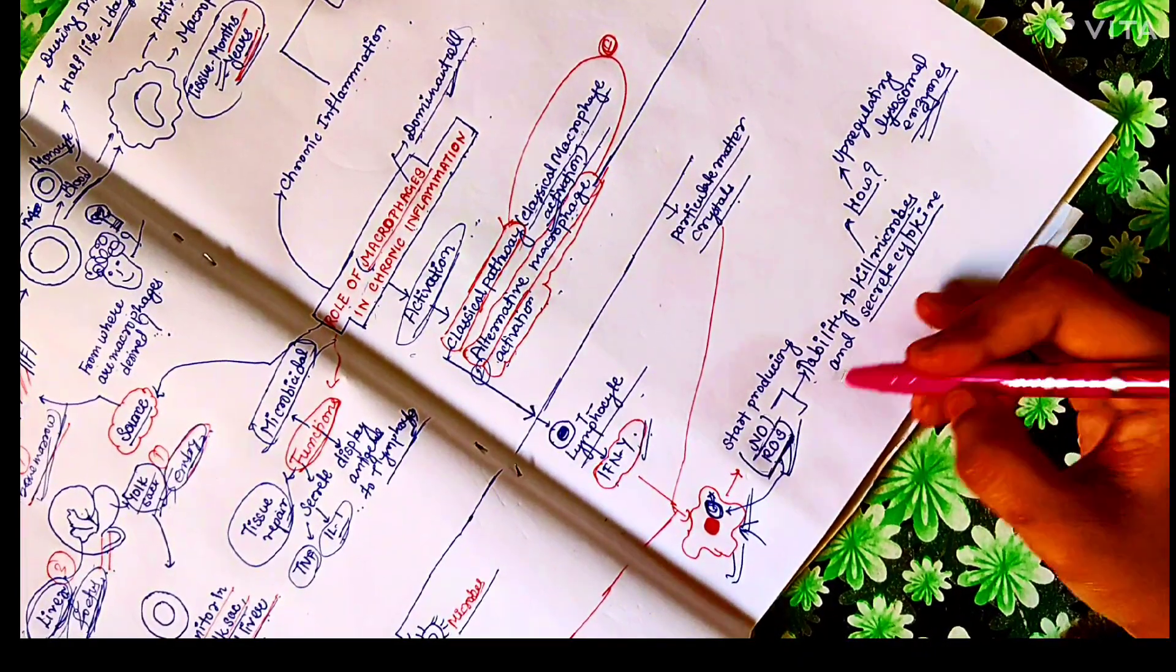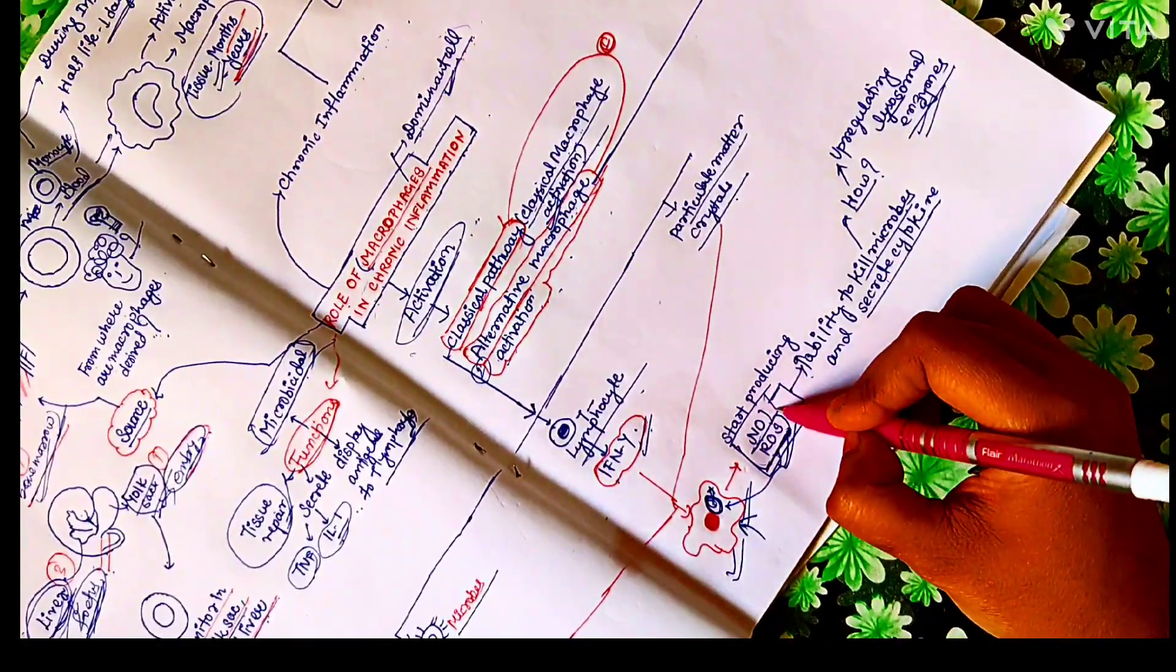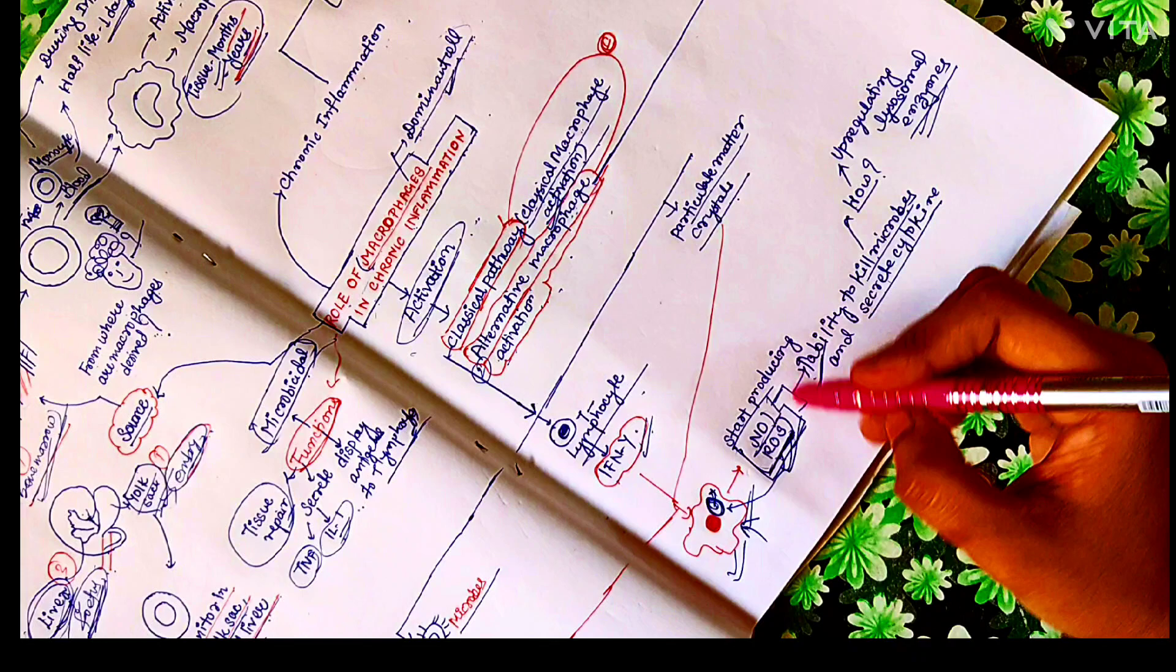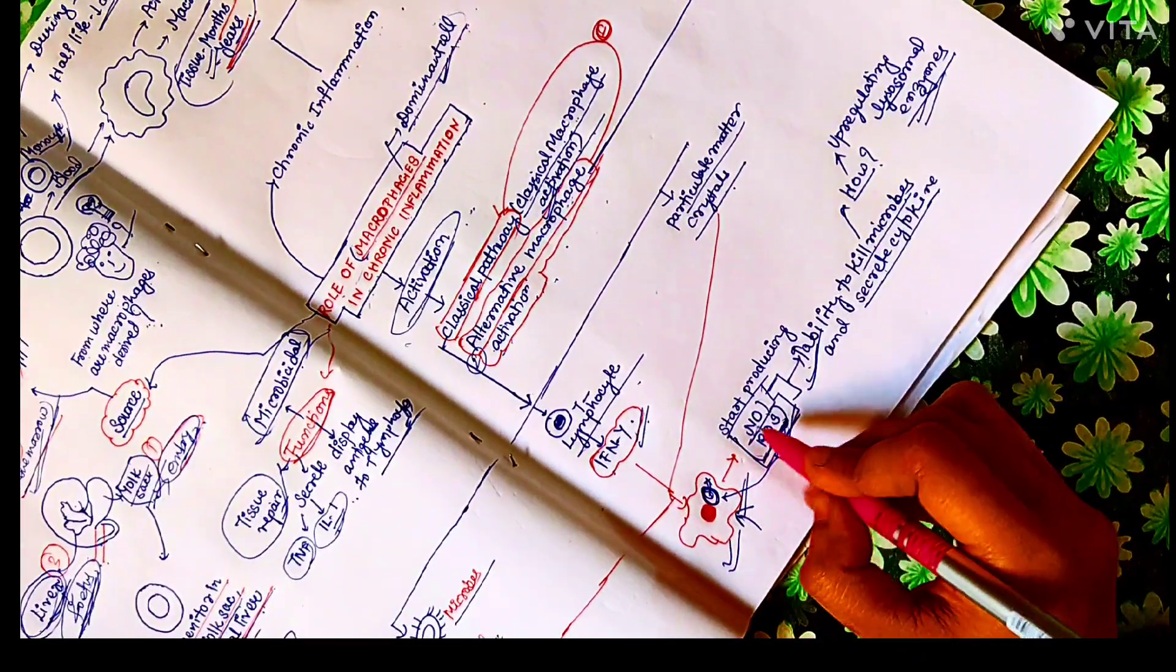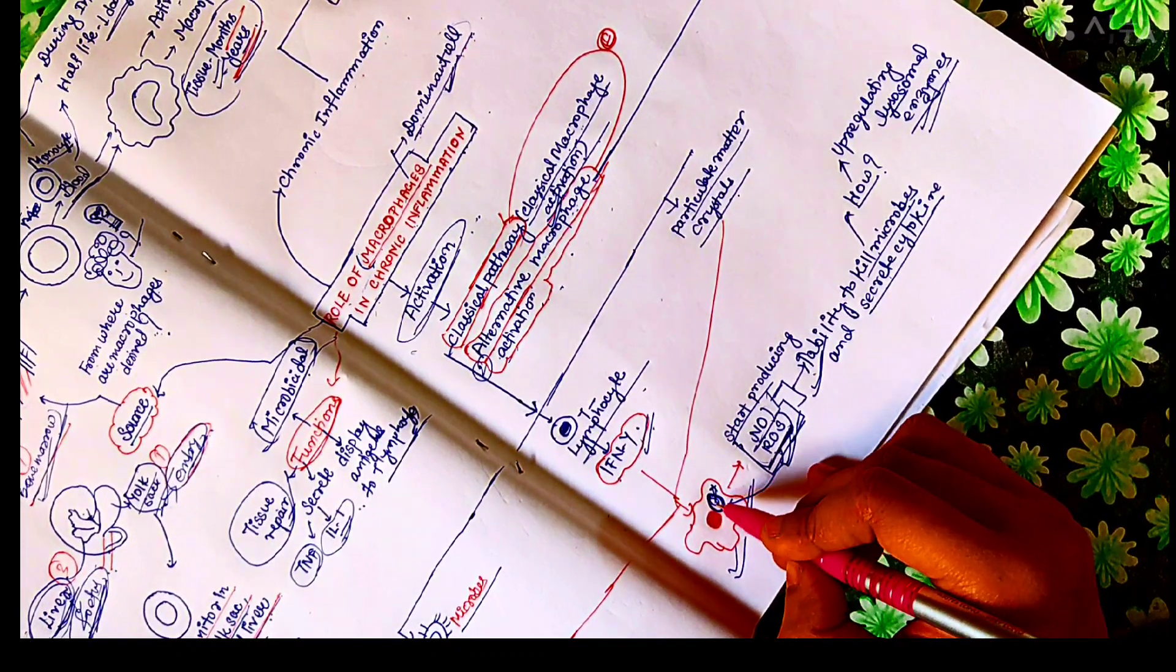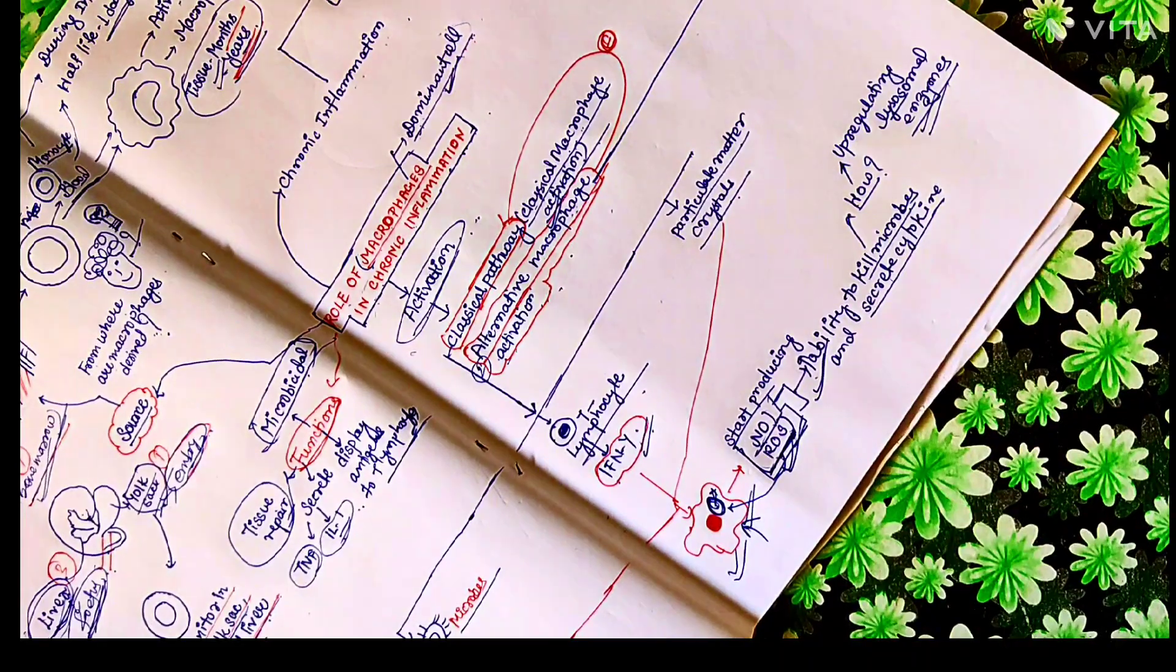So how do these chemical mediators, nitric oxide and reactive oxygen species, increase the ability to kill the microbes? They do so by upregulating the lysosomal enzymes. And we know how active these lysosomal enzymes are. If excessive, they start damaging the normal tissue also.